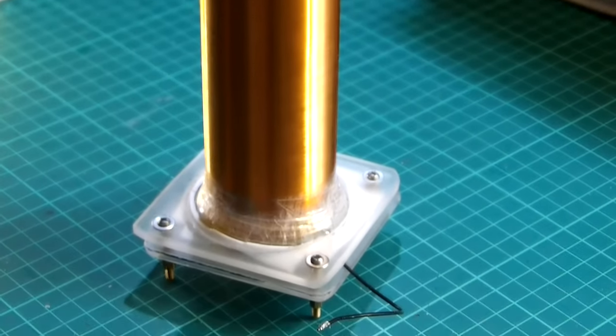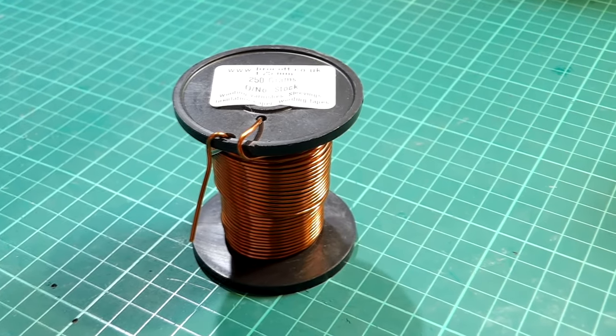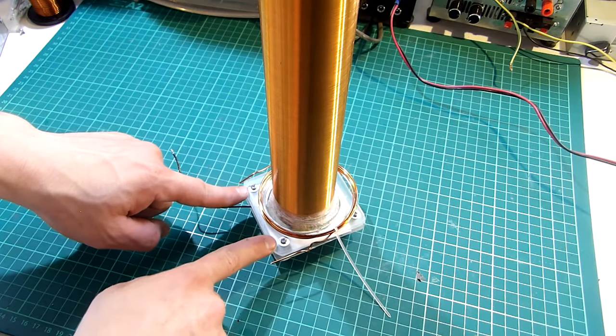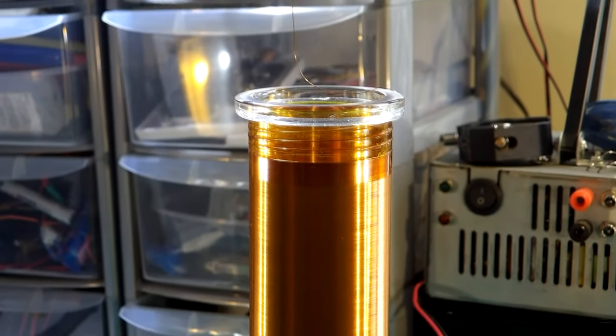Now after the coil is mounted we can start making the primary coil of the tesla coil. For making the primary coil I will be using some 1.25mm enameled wire and after giving it 2 turns of wire the tesla coil is done. Keep in mind that my tesla coil is not having a top load.